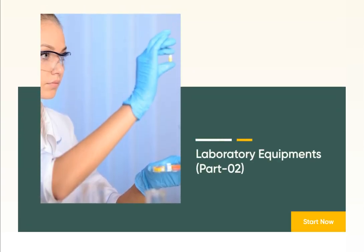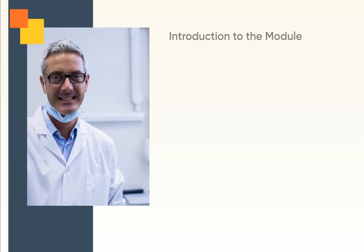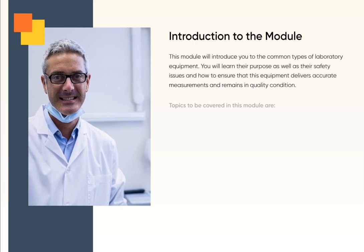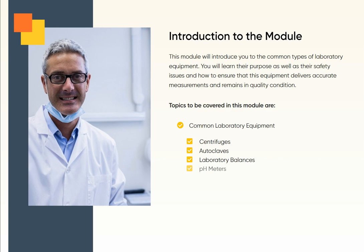Laboratory Equipment, Part 2. This module will introduce you to the common types of laboratory equipment. You will learn their purpose as well as their safety issues and how to ensure that this equipment delivers accurate measurements and remains in quality condition. Topics to be covered in this module are: Common Laboratory Equipment, Centrifuges, Autoclaves, Laboratory Balances, pH Meters, Temperature Controlled Units, Refrigerators, Safety Cabinets, and Fume Hoods.